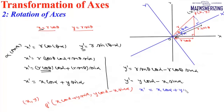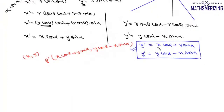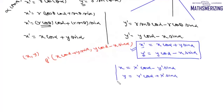So the results are: X dash equals X cos alpha plus Y sin alpha, and Y dash equals Y cos alpha minus X sin alpha. If we need to write X and Y in terms of X dash and Y dash, solving those two equations gives X equals X dash cos alpha minus Y dash sin alpha, and Y equals Y dash cos alpha plus X dash sin alpha. We use the first formula to find coordinates of points, and the second formula to find the equation of a curve in the new system.